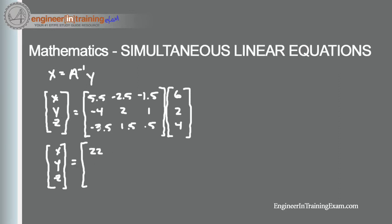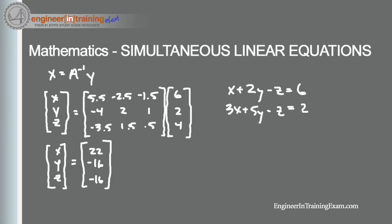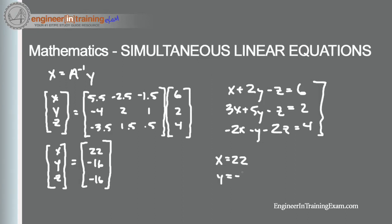That gives us the first value of 22, and carrying out the remaining matrix multiplication we get 22, negative 16, negative 16. So for the original set of linear equations — x plus 2y minus z equals 6, 3x plus 5y minus z equals 2, and negative 2x minus y minus 2z equals 4 — the solutions are x equals 22, y equals negative 16, and z equals negative 16.